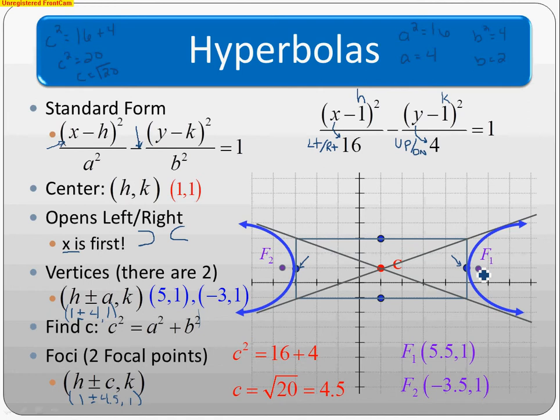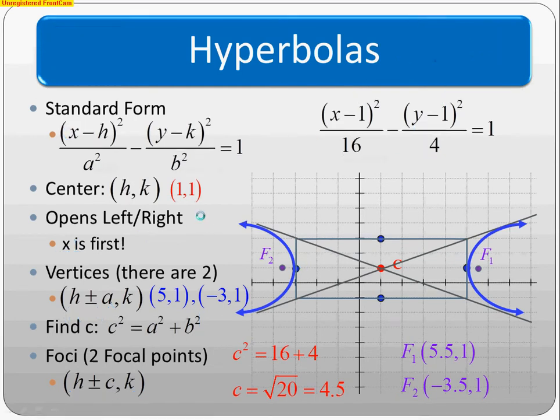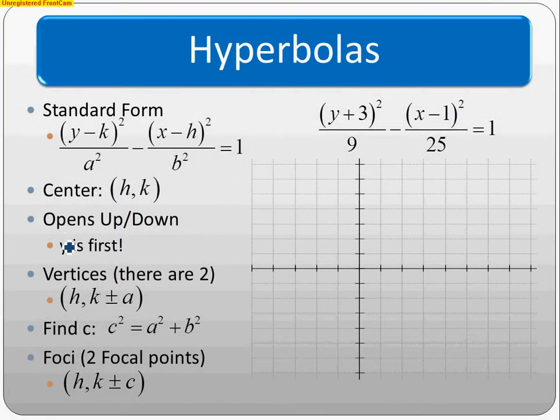We'll use 4.5, so (1±4.5, 1) gives two focal points: (5.5,1) and (-3.5,1), inside each part. That's how you graph a hyperbola. It opens left and right because X was first. Next example: Y is first, so it opens up and down.